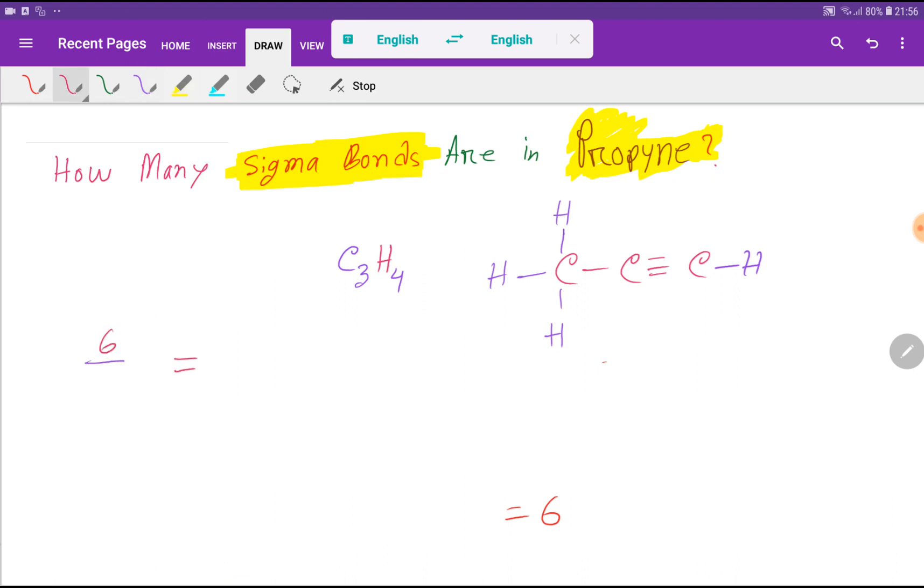Double bond means one sigma bond and one pi bond, and triple bonds mean one sigma bond and two pi bonds. So sigma bond is present for single bond, double bond, and triple bonds.